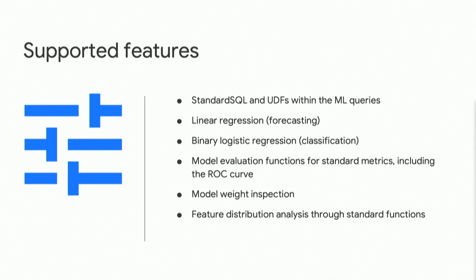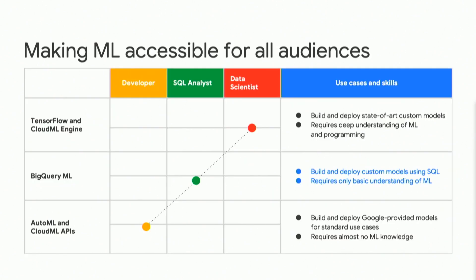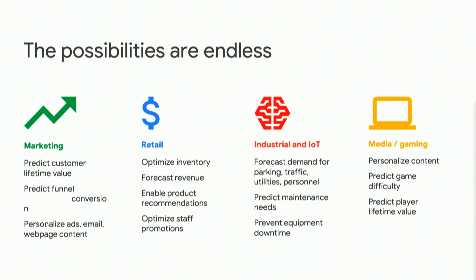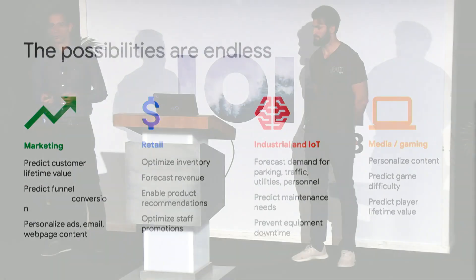We support multiple functions for model evaluation and inspecting model weights. Comparing BigQuery ML with other Google Cloud ML products: on one end, Cloud ML Engine and TensorFlow are fine-tuned for custom models but require a lot of ML expertise. On the other, AutoML and Cloud ML APIs are very easy to use but not very customizable. BigQuery ML sits in the middle — you can do machine learning without a lot of ML expertise, but you can also build very customizable models. Use cases span industries: predicting customer lifetime value, forecasting demand, and traffic prediction.